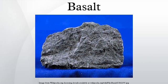On Earth, most basalt magmas are formed by decompression melting of the mantle. Basalt commonly erupts on Io, the third largest moon of Jupiter, and has also formed on Earth's Moon, Mars, Venus, and the asteroid Vesta. The crustal portions of oceanic tectonic plates are composed predominantly of basalt, produced from upwelling mantle below the ocean ridges.